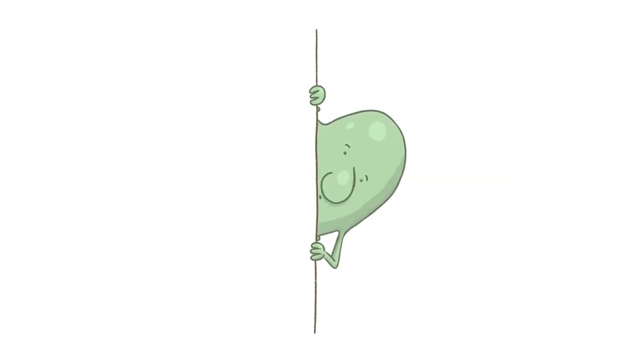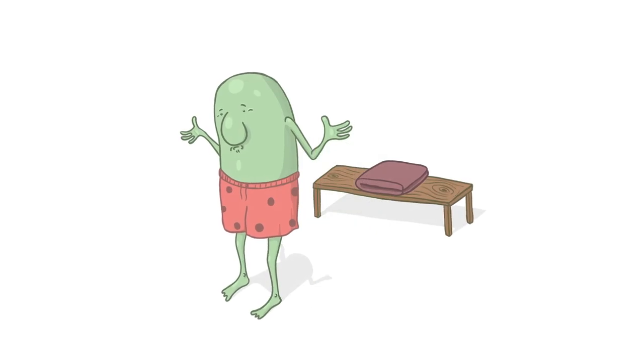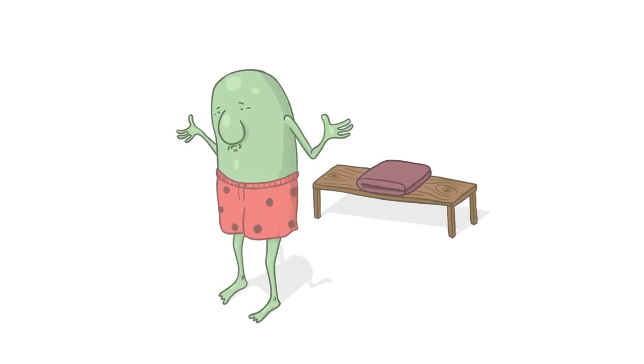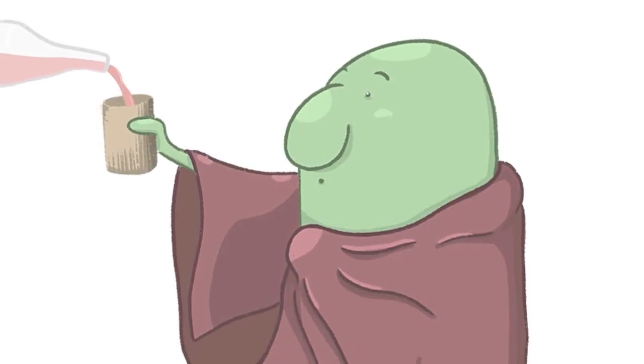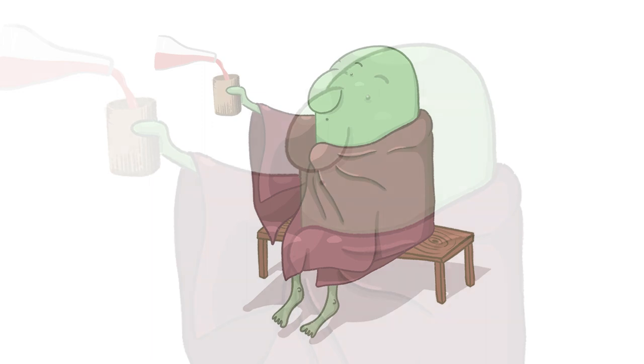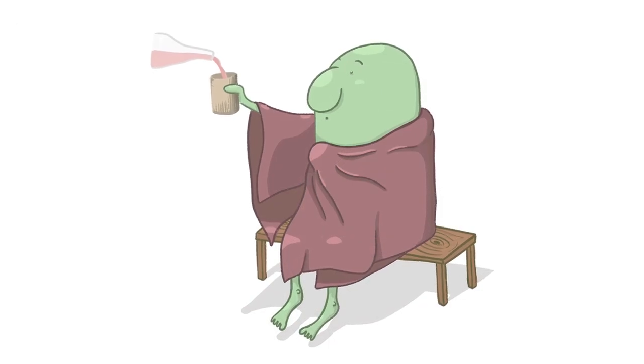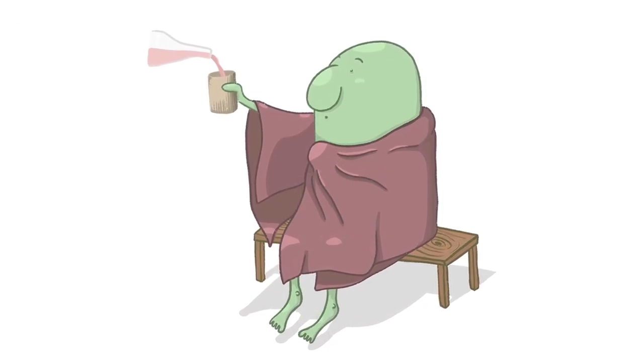The Pobble who has no toes had once as many as we. When they said, someday you may lose them all, he replied, fish, fiddledy-dee. And his Aunt Jibisca made him drink lavender water tinged with pink, for she said, the world in general knows there's nothing so good for a Pobble's toes.